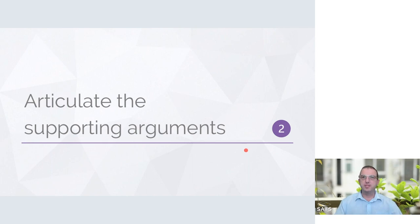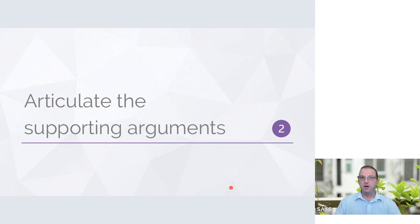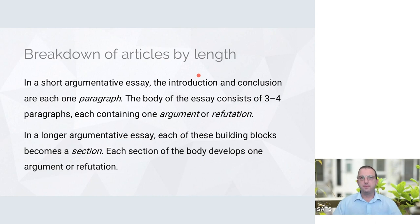Step two is to articulate the supporting arguments. Once you've got a central claim, the question becomes: what are the things that persuade me that your view or interpretation is the most convincing explanation? Those are your supporting arguments — whatever they are, they are the reasons the reader should accept your thesis as the best explanation.